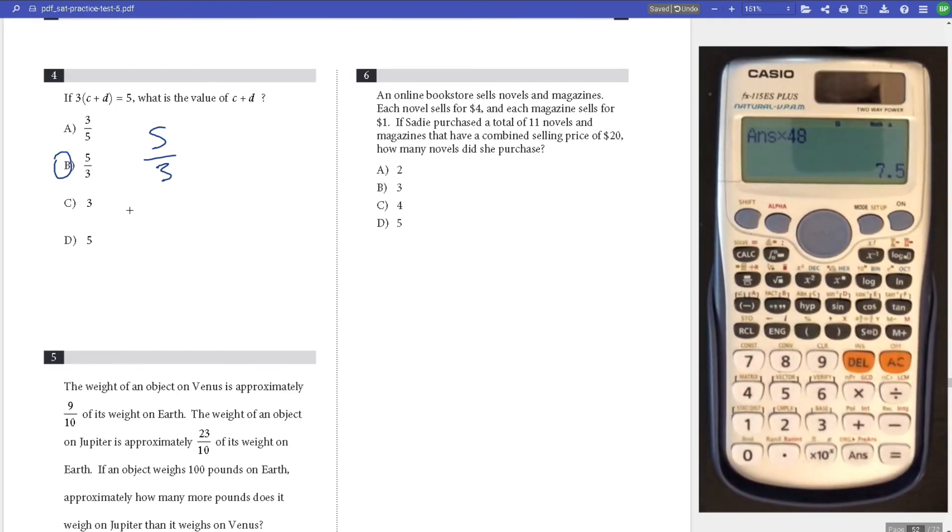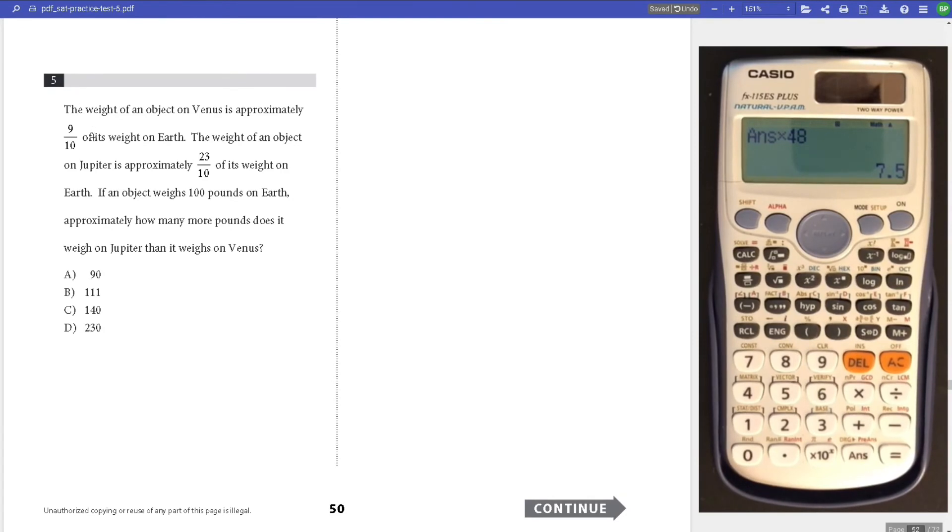Number 5, weight on Venus is 9 tenths of weight on Earth. Weight on Jupiter is 23 over 10 on Earth. If an object weighs 100 pounds on Earth, how many more pounds is weight on Jupiter than Venus? Jupiter's weight would be 100 times 23 over 10, that's 230. Venus would be 9 over 10, that would be 90. Subtract, the difference is 140.